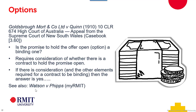If I offer to sell you this phone, at any point before you accept I can withdraw my offer. But if you say 'will you hold that offer open until tomorrow?' and I just say yes informally, tomorrow I might still have it open, but if I withdraw it you can't sue me — unless we had a contract to keep it open. A promise to hold an offer open is only binding if that promise is made as a contract.